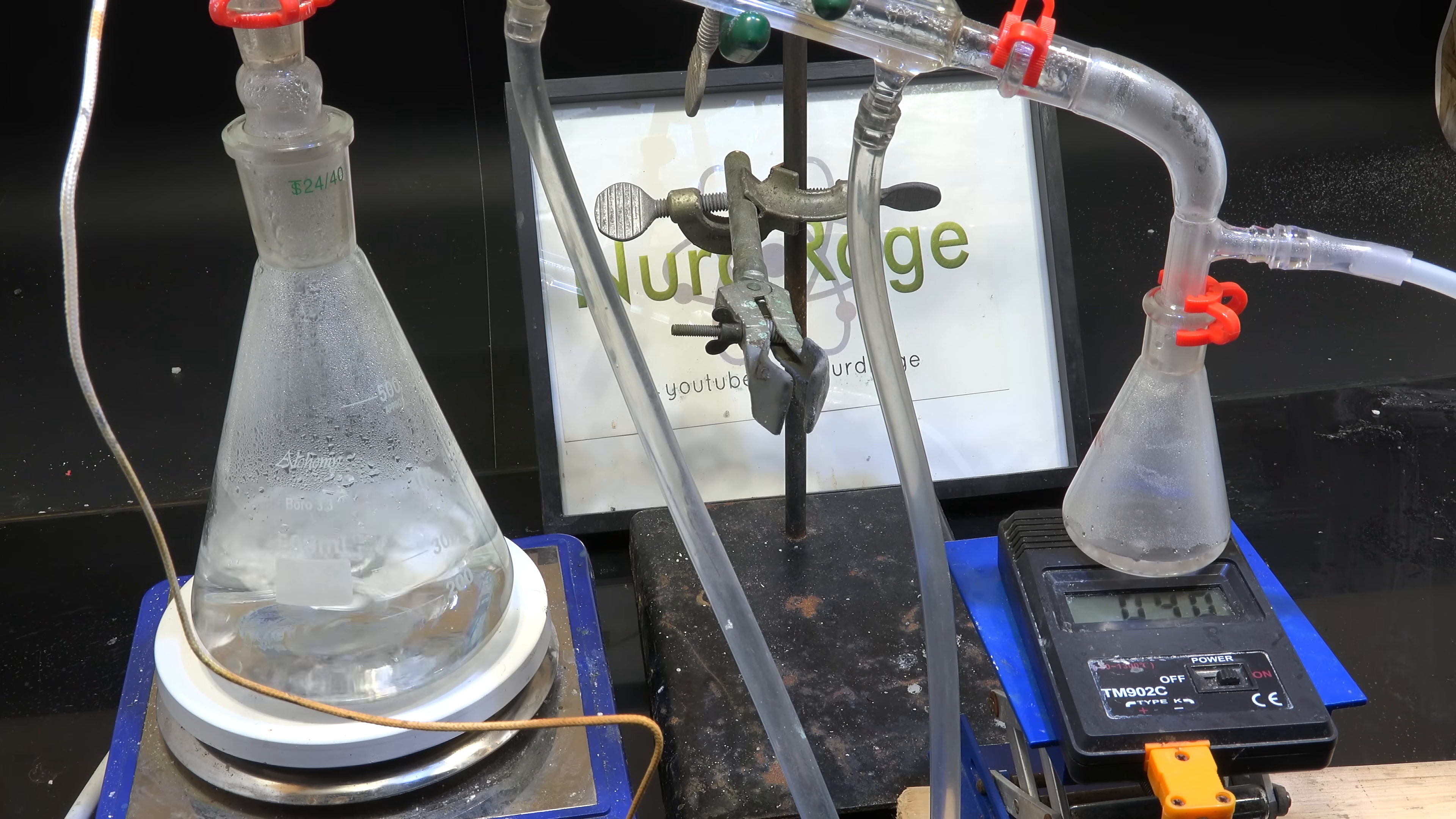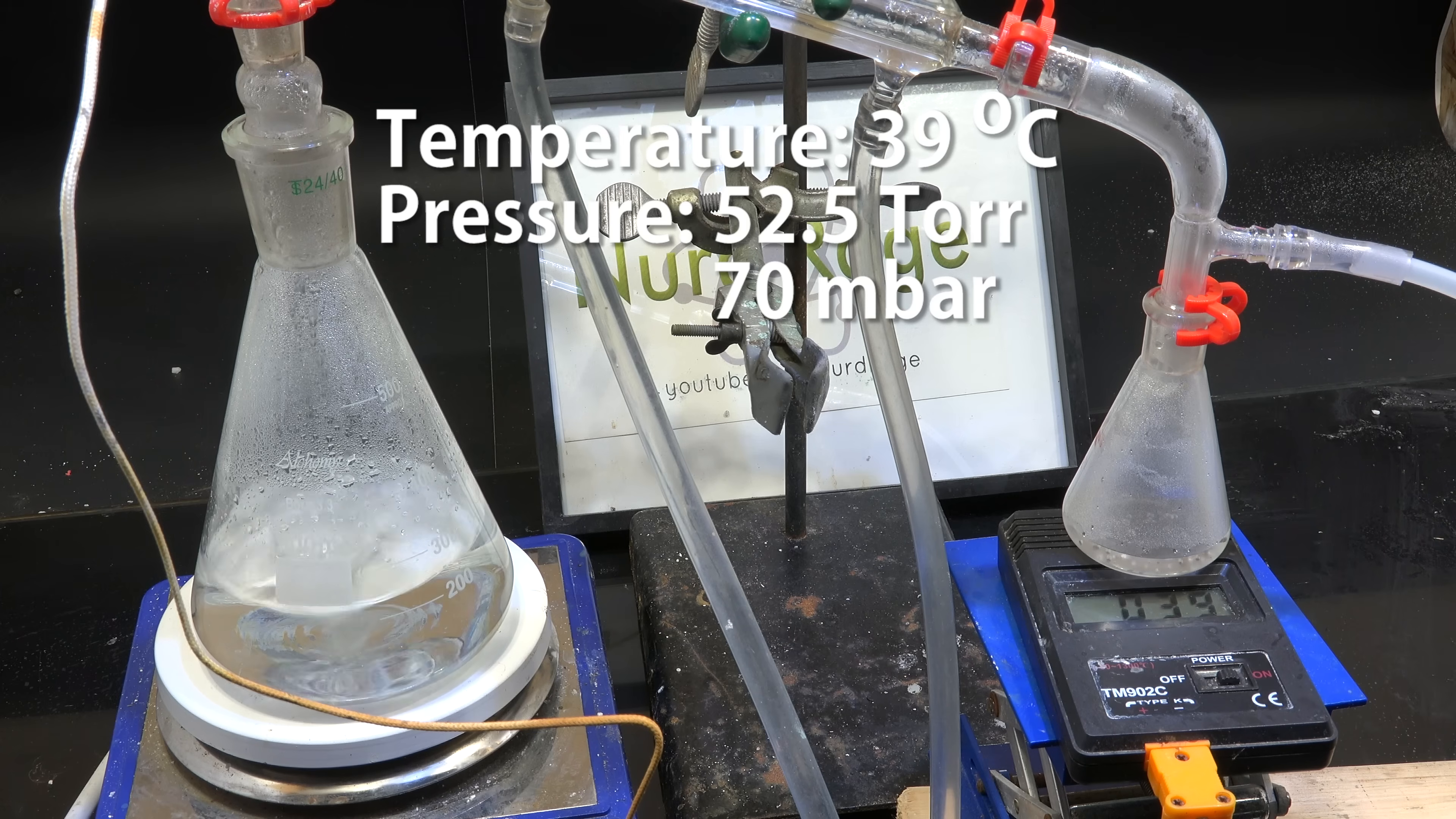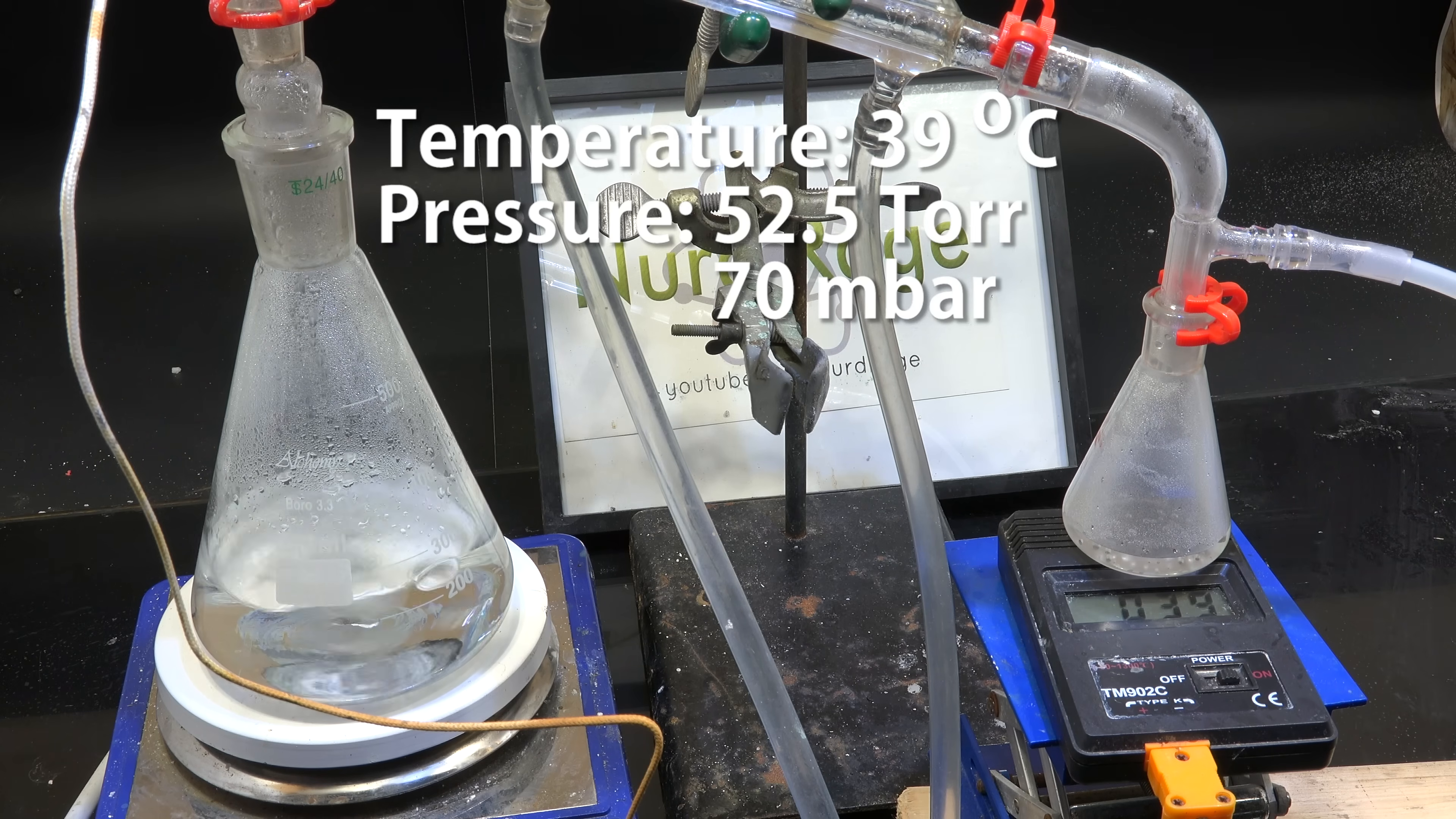We can actually calculate the pressure based on the boiling point since the properties of water are well known. To boil water at 39 degrees celsius the pressure inside the apparatus must be at around 52.5 torr or about 70 millibar.